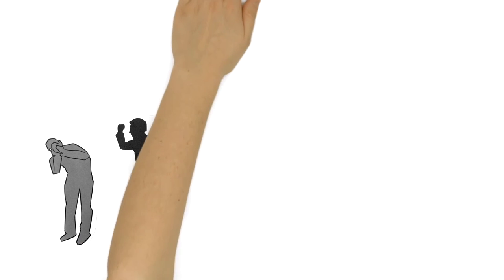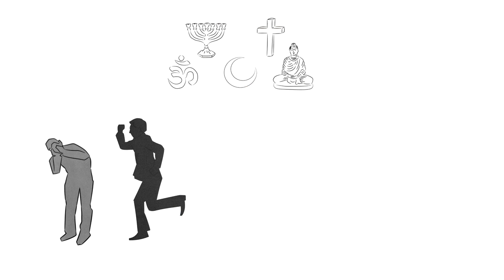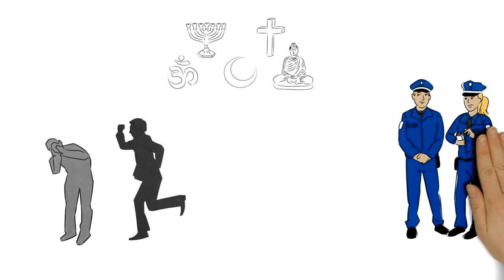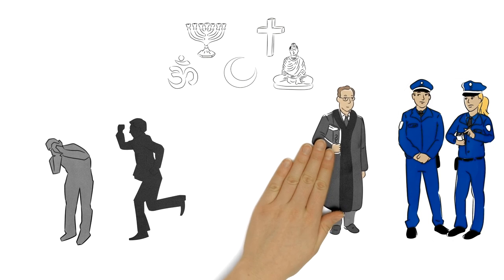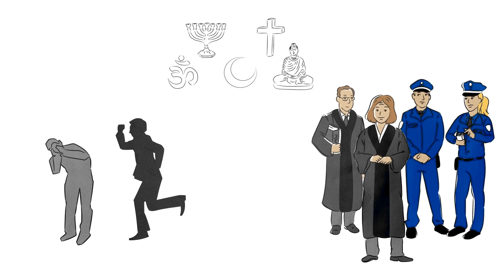Private persons, clerics or self-appointed justices of the peace may neither investigate nor punish crimes. This falls exclusively to the police, the prosecutor and the courts. We call this the state's monopoly on violence.